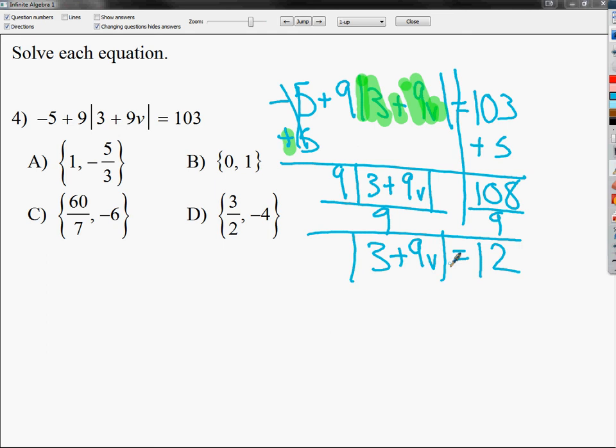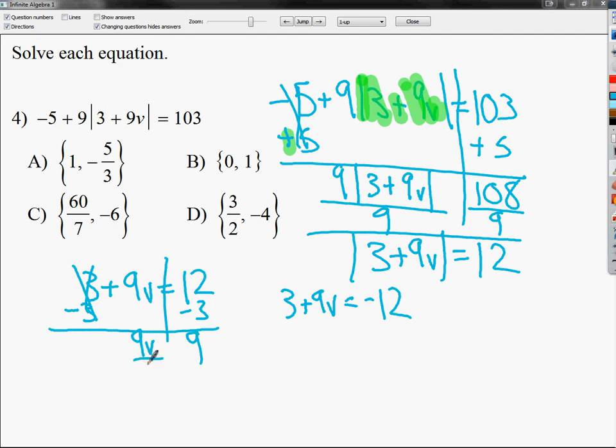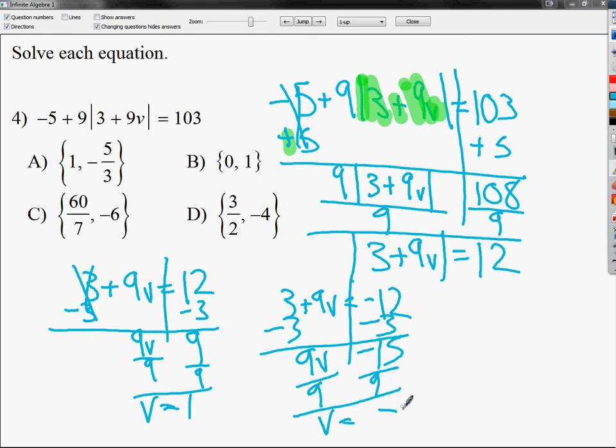At this point, I have an absolute value by itself equal to a number. So, I'm going to rewrite it into two problems. 3 + 9V = 12. And the other one is going to be 3 + 9V = -12. Draw my line. My V is next to my 9, so I need to get rid of plus 3. So, I have to subtract 3. Divide by 9. V is equal to 1. On the other one, draw my line. Subtract 3. It gives me -15. I need to divide by 9 here. V is equal to -5/3. By the way, when you type it into your calculator, you'll probably get -1.6 repeating or something like that. Hit the ABC to DE button and it should take you back to this. So, your answer for number 4 is A.